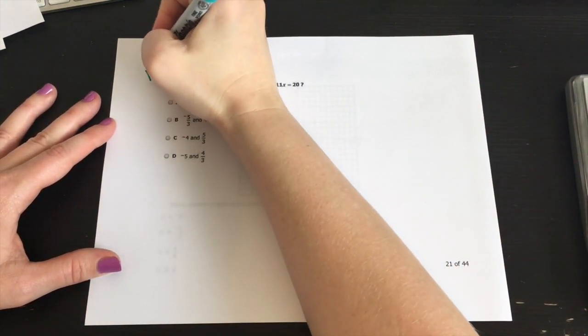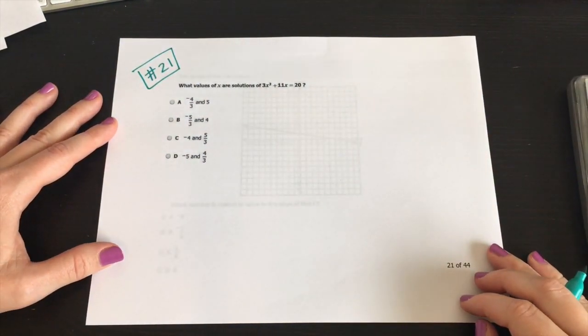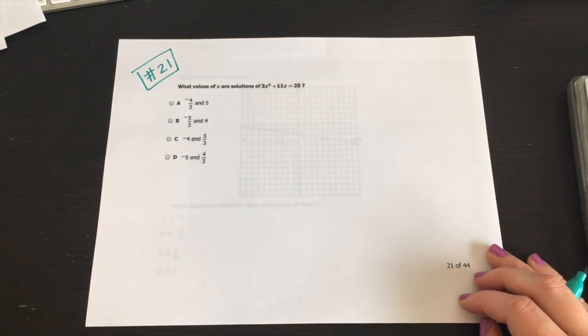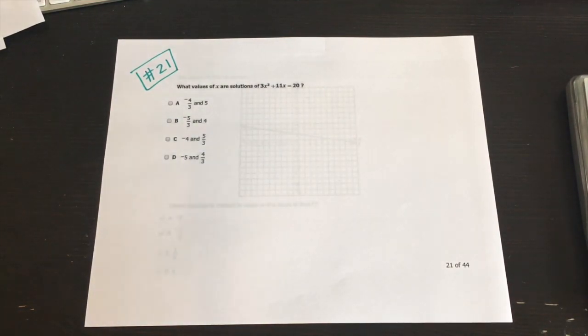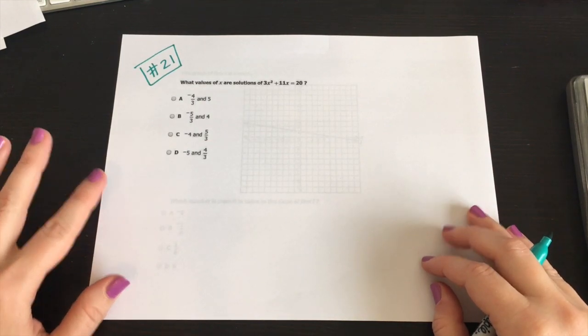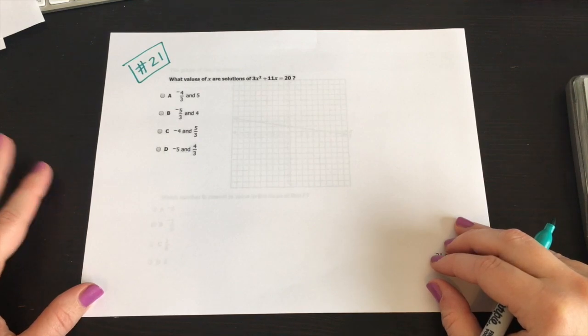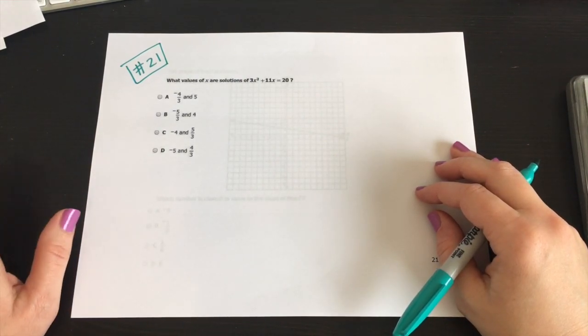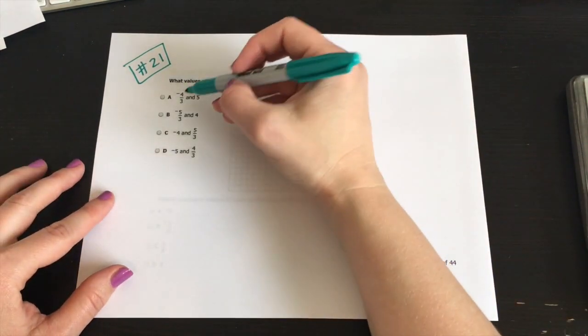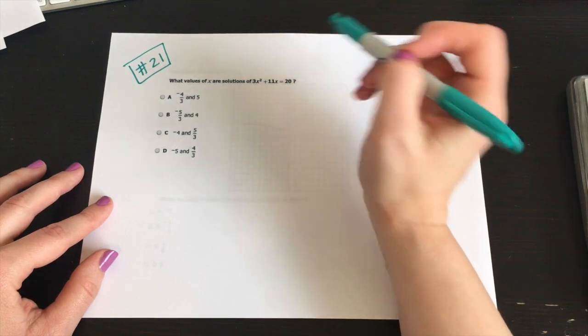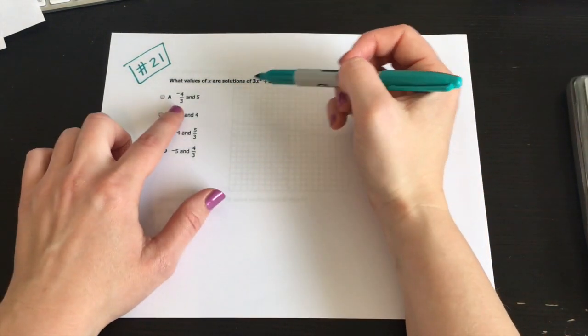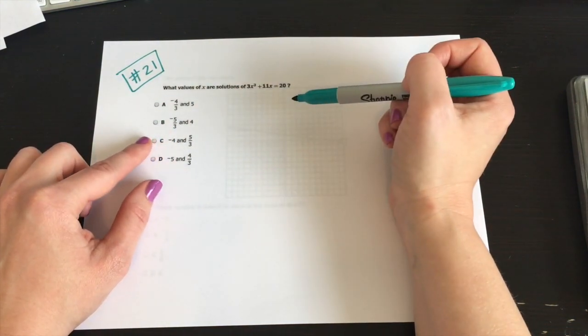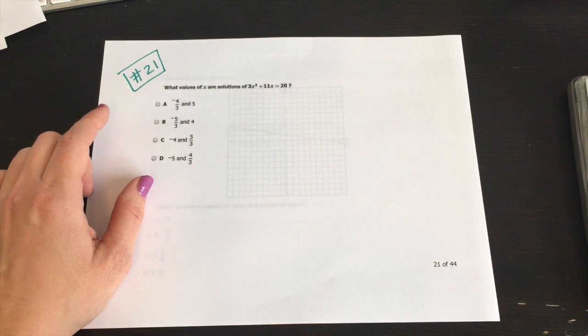Here we are with question number 21. What value of x are solutions of 3x squared plus 11x is equal to 20? Now there are two approaches to this. If you've forgotten everything and you're going into your test and you're like, I have no idea how to solve this, the first way I would look at this is plug these answers in. You could go through and plug them in and see if you can get something that equals 20. Both answers need to give you 20. If they don't, then it doesn't work.